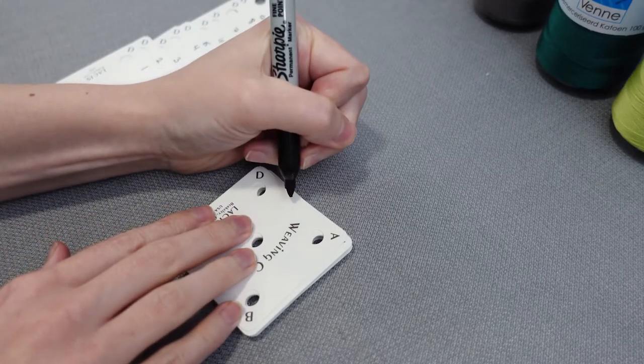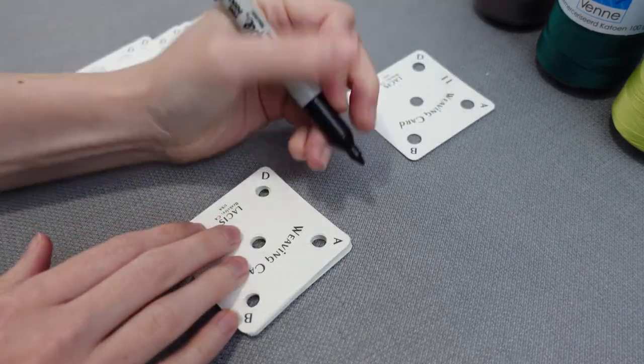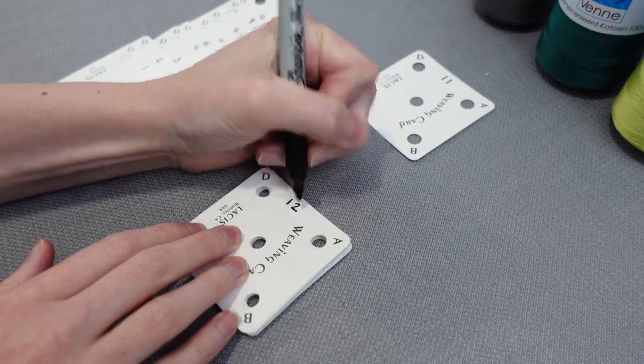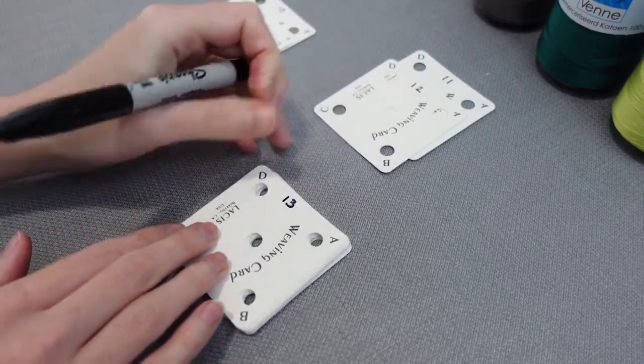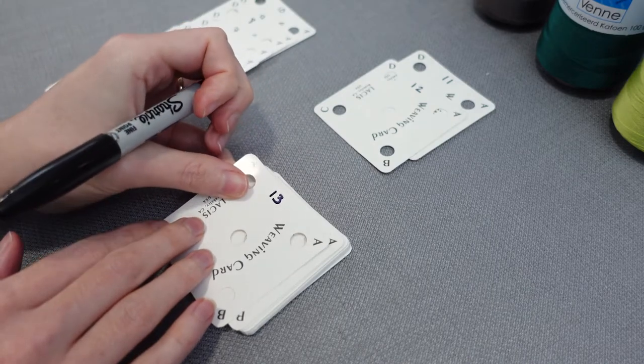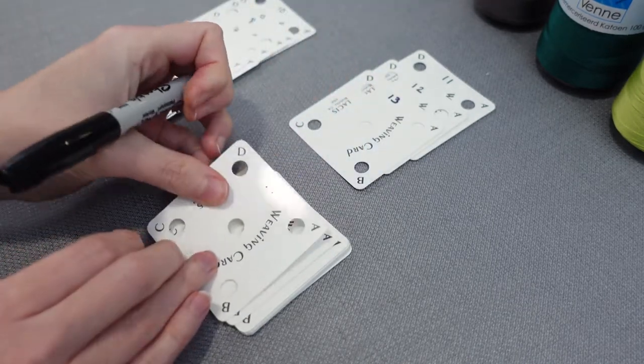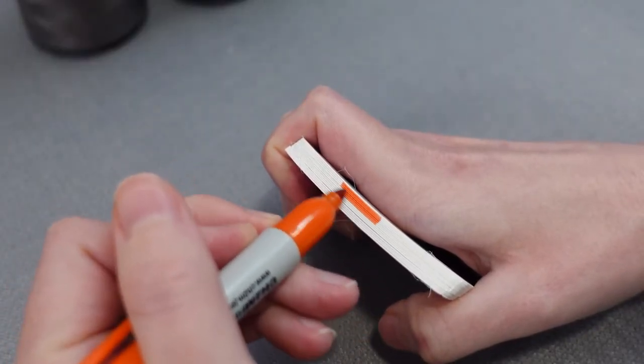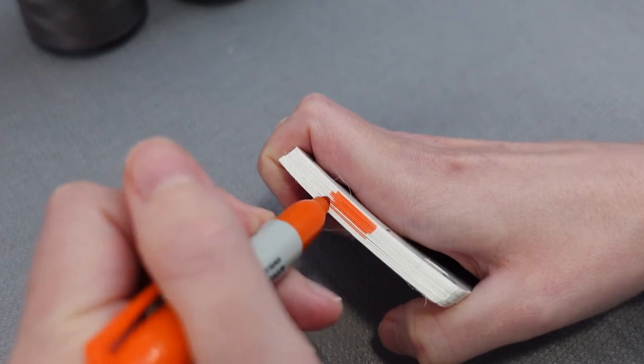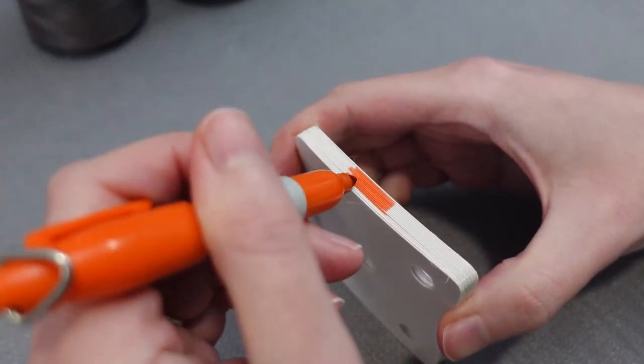To prep for weaving, you should number your cards and mark the starting position of the cards between letters A and D. This will become helpful later. I decided just to use an orange Sharpie to mark that starting position. This will make it really obvious once you've finished a sequence of turns.